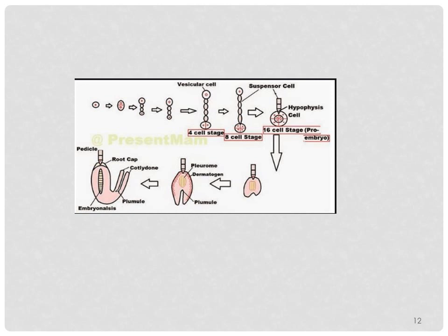In the figure you can see the developmental stages: the zygote divides into two cells, then a four-cell stage occurs with a vascular cell present at the top, then an eight-cell stage with suspensor cells, and after that the sixteen-cell stage called the pro-embryo stage, where the hypophysis cells and suspensor cells can be clearly seen. Initially it is heart-shaped, developing the plumule, dermatogen, and periblem. From this structure, the root cap, plumule, and cotyledons are formed by the process of embryogenesis.